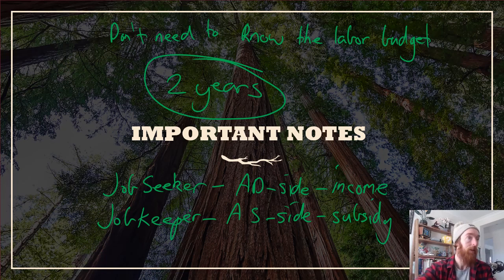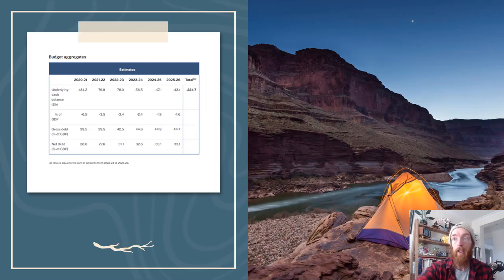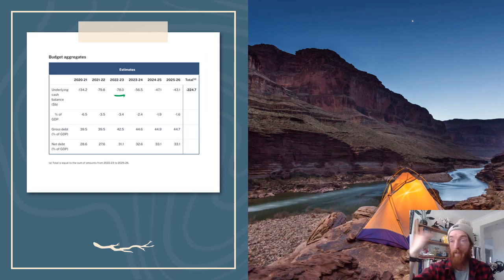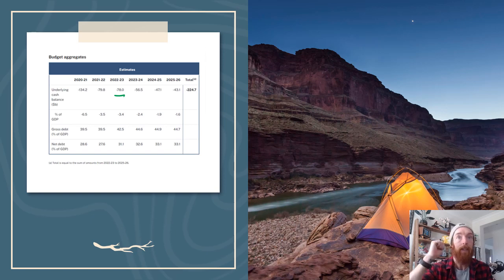Getting into some of the nitty gritty about the 2022-2023 budget: the underlying cash balance predicted for this year is a deficit of $78 billion. Whether or not that happens, we're not sure. The Labor budget is going to be a larger deficit than that, but that is the current underlying cash balance predicted for this financial year.